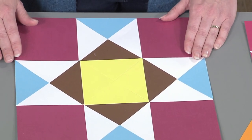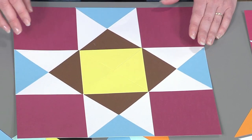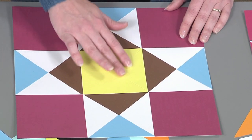In this Ohio star block, I also used brown again and red. And I offset it with some white, blue, and this neon yellow.